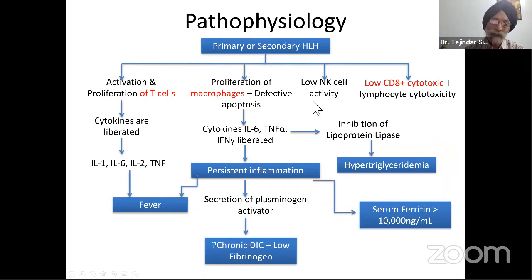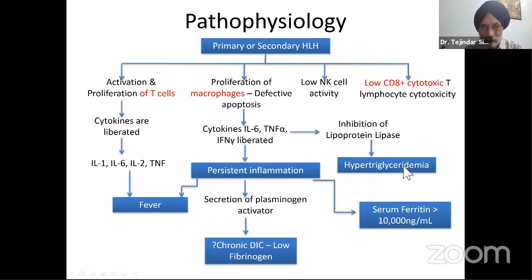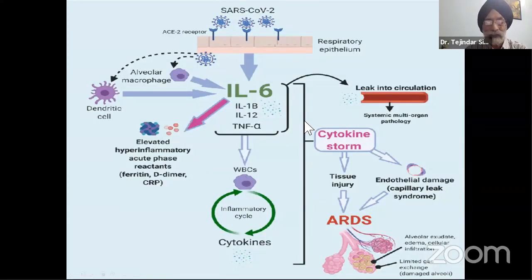The pathophysiology of HLH: there is activation and proliferation of T cells; cytokines are liberated resulting in fever. There is proliferation of macrophages and defective apoptosis. TNF-alpha and interferon-gamma are liberated, leading to persistent inflammation and fever. Inhibition of lipoprotein lipase leads to hypertriglyceridemia. Serum ferritin goes up, possibly as high as 10,000 nanograms. Because of the secretion of plasminogen activator, there is chronic DIC, and D-dimer is present.